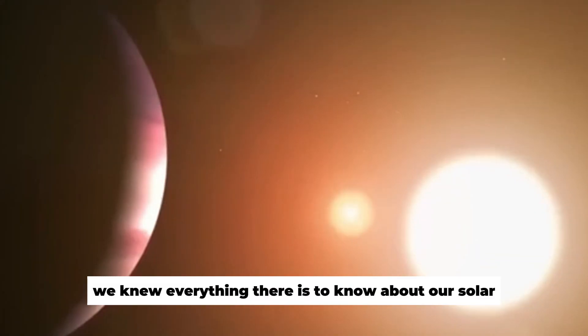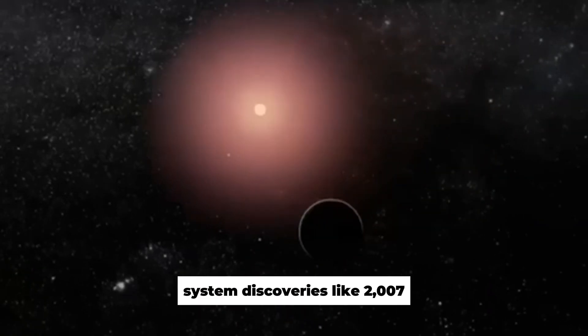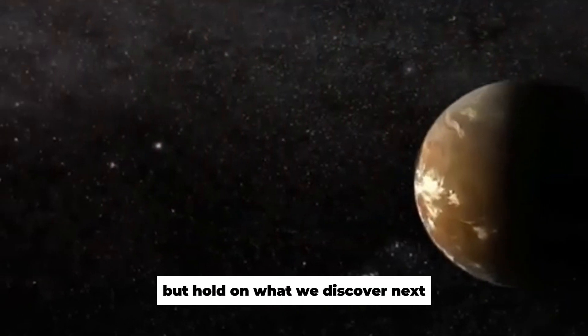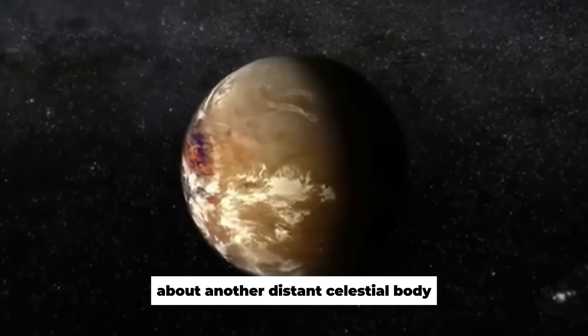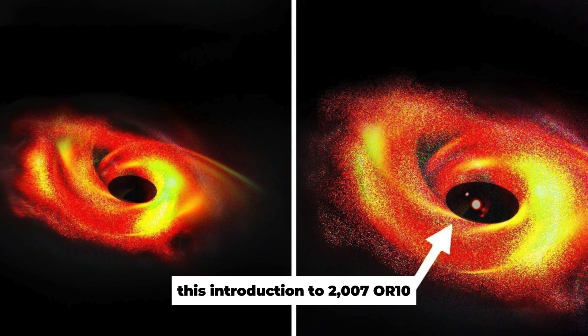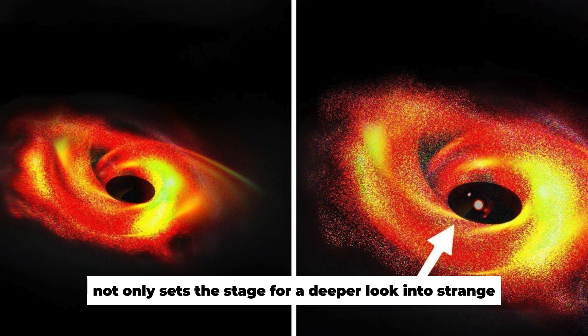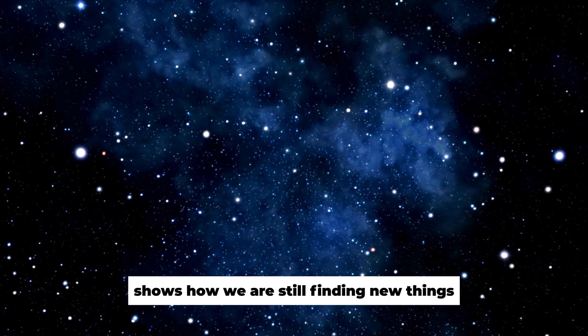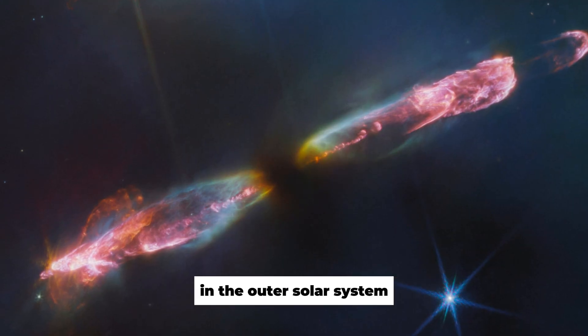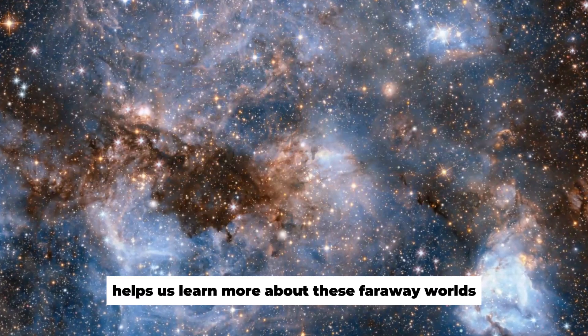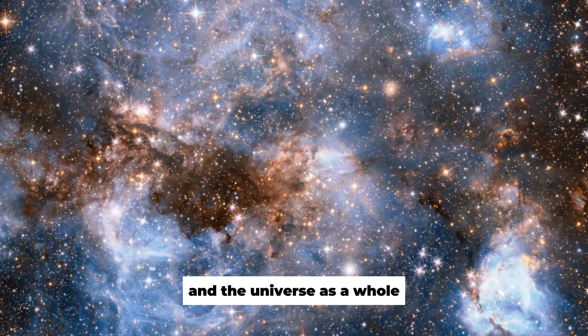Just when you thought we knew everything there is to know about our solar system, discoveries like 2007 OR10 come along to challenge our perspectives. But hold on, what we discover next about another distant celestial body might just redefine the impossible. This introduction to 2007 OR10 not only sets the stage for a deeper look into strange celestial bodies, but also shows how we are still finding new things in the outer solar system. Every piece of information we get helps us learn more about these faraway worlds and the universe as a whole.